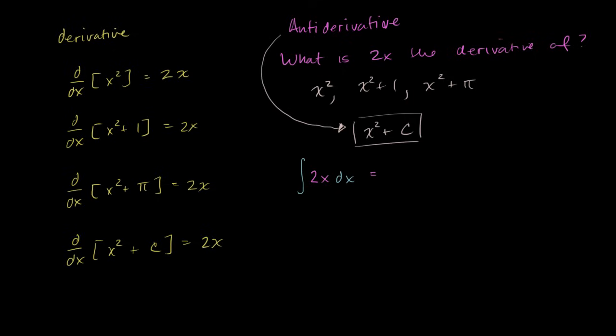And the antiderivative of 2x, we have already seen, is x squared plus c. Now, you might be saying, why do we use this type of crazy notation? It will become more obvious when we study the definite integral and areas under curves and taking sums of rectangles in order to approximate the area of the curve. Here, it really should just be viewed as a notation for antiderivative. And this notation right over here, this whole expression is called the indefinite integral. The indefinite integral of 2x, which is another way of just saying the antiderivative of 2x.